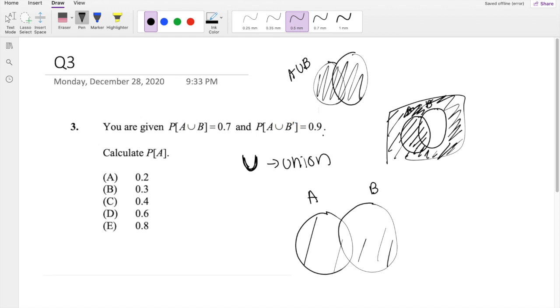So you can also think of this as just this B part right here is 0.1, okay? So this is 0.1 right here.